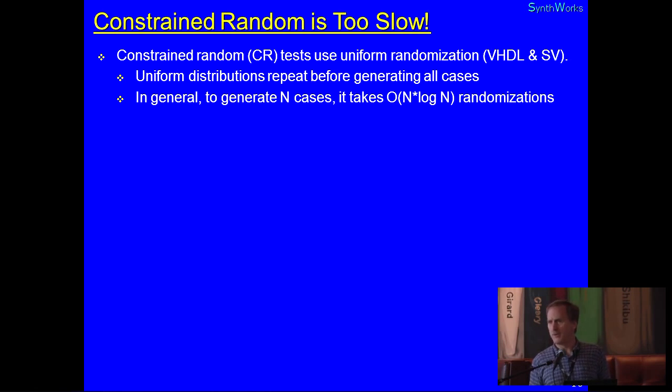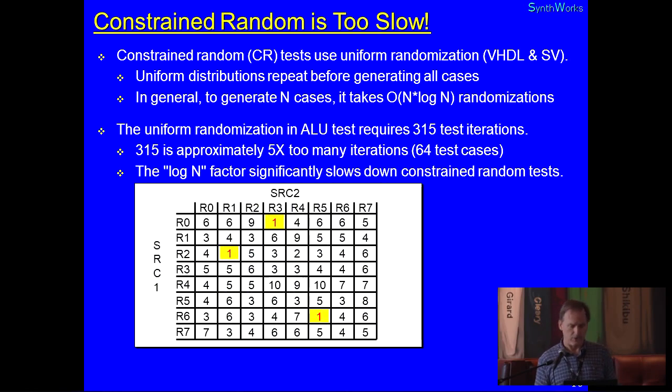Now, one thing we'll note, though, about constrained random is it can be slow. Because uniform randomization is all about uniform over a large set of numbers. Testing is not. Testing is I want to get some number of tests, but I'm not going to run thousands of each different test case. So what randomization theory tells us is that to do N unique test cases, it takes N times natural log N to get there. And this is why you're going to hear things about portable stimuluses because that's one of the answers to it. OSVVM has its own built-in capability that I'm going to show you here, too. Basically, if we look at that last test run, it takes roughly 315 test iterations. And mind you, that was me cherry-picking a seed that was good because I was trying to show constrained random was good. But this is roughly 5x more than the ideal 64 that we would have liked to see. So that log N factor is going to significantly slow your test down, even on something small like this.